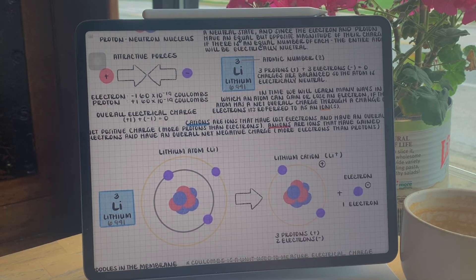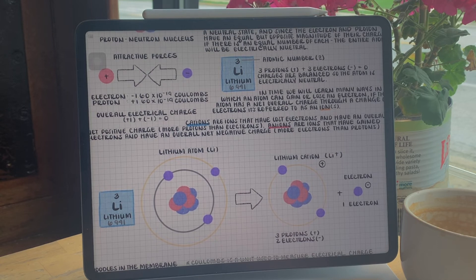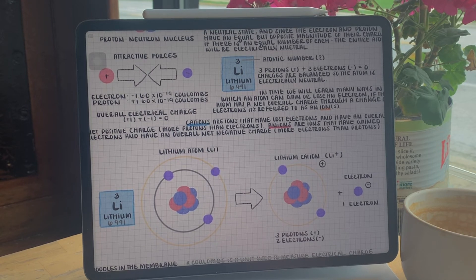Cations are ions that have lost electrons and have an overall net positive charge, more protons than electrons. Anions are ions that have gained electrons and have an overall net negative charge, more electrons than protons.